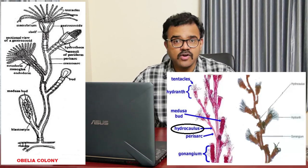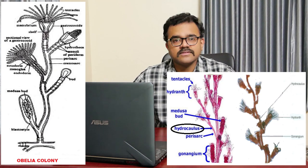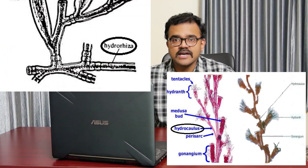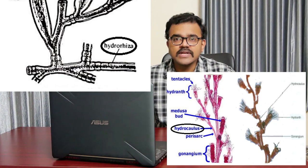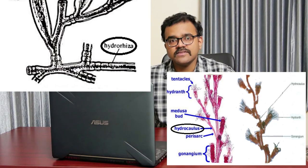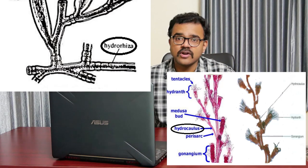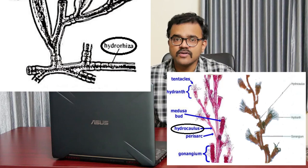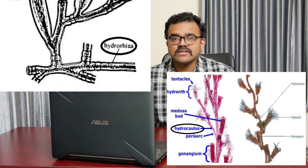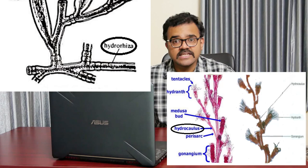Each polyp has a cylindrical body attached to the hydrocollus with its proximal end and free at its distal end. The Obelia colony is formed of two portions: the horizontal portion called the hydrorhiza, and the vertical portion bearing the zooids named the hydrocollus. The hydrorhiza is a branched structure that gives mechanical anchorage to the whole colony, and gives rise to vertical hydrocollus which has short lateral alternate branches bearing zooids at their ends.